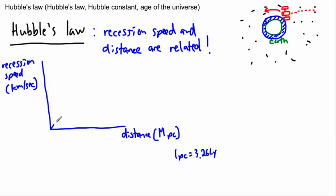And if we do that, he found out, or at least he estimated, that it was a roughly linear curve. So this is sort of how it went. So that means the faster something is going, the farther it is.